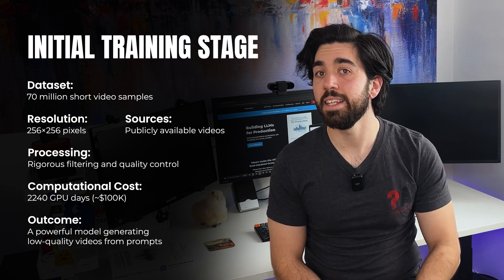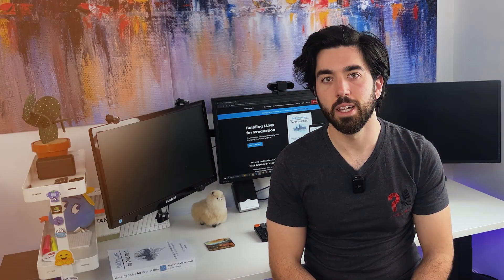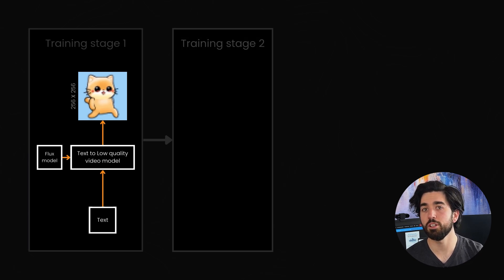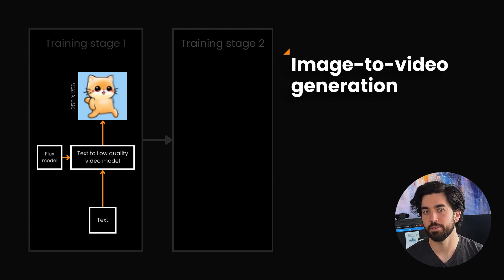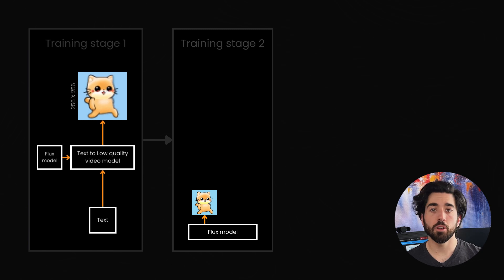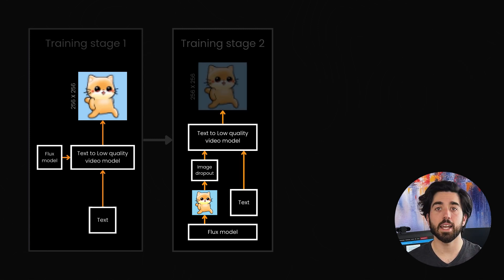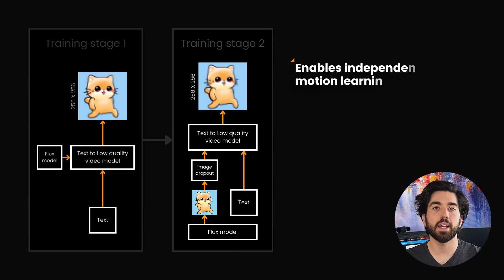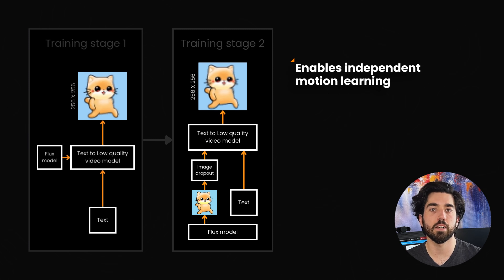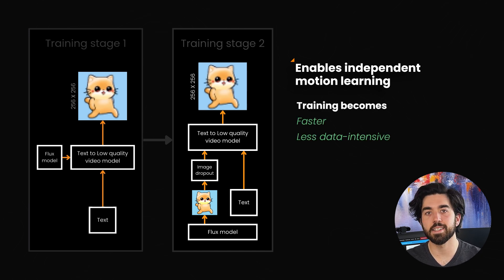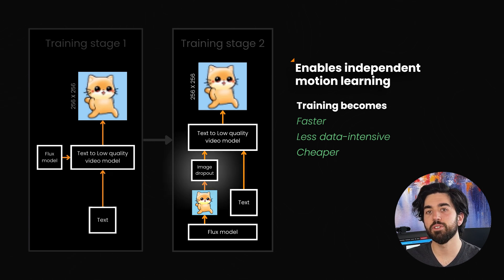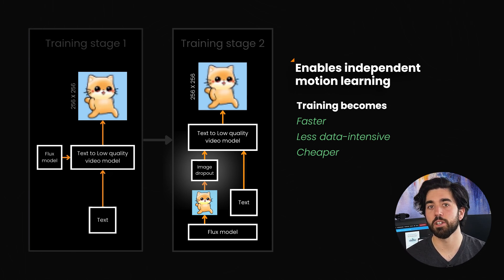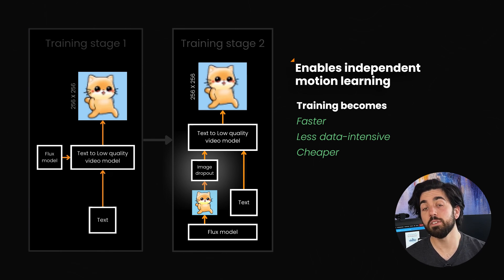Stage 2 further simplifies the training process by transitioning from text-to-video generation to image-to-video generation, still at 256 pixels. Instead of relying solely on text prompts, the model learns how to extend a single image into a short video. To do this, they modify their conditioning method by encoding the initial image and adding it as extra information into the latent video representation. This allows the model to learn explicit motion generation independently from the complexities of scene creation. By focusing purely on motion using a pre-generated FLUX image, the training becomes faster, less data intensive, and significantly cheaper. To ensure robustness, the team also introduces a dropout mechanism for the image conditioning step, randomly forcing the model sometimes to generate videos without an additional image, thus keeping its text-to-video capabilities sharp.